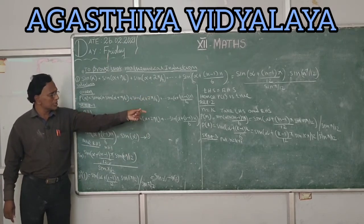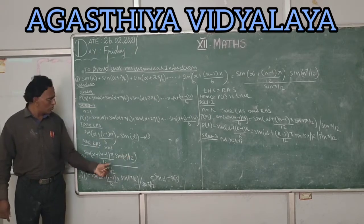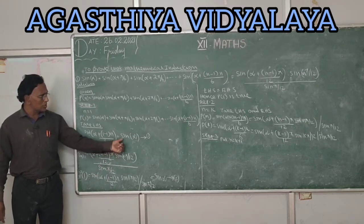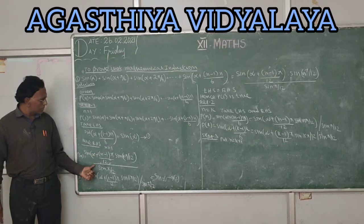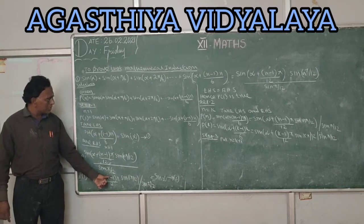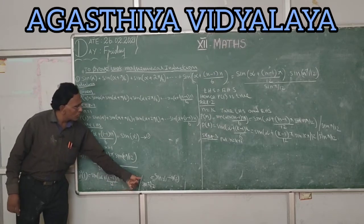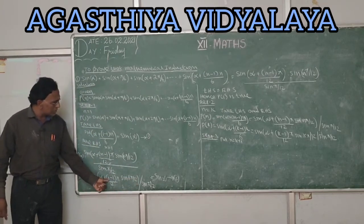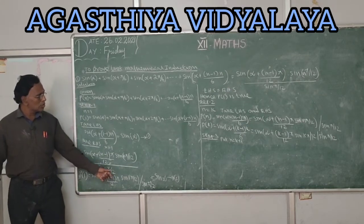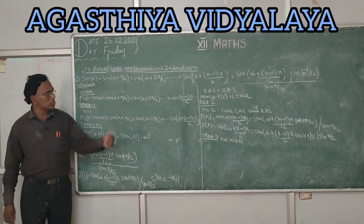Now for the RHS: sin(α + (n−1)π/12) · sin(nπ/12) divided by sin(π/12). Substituting n equal to 1, the factor (1−1) equals 0, so that entire term becomes 0, leaving sin α on the RHS — equation 2. Therefore LHS equals RHS, and Step 1 is proved.